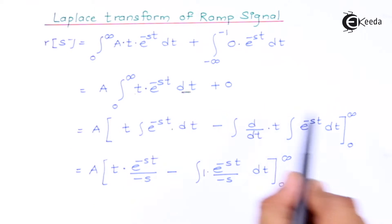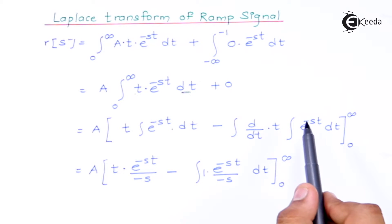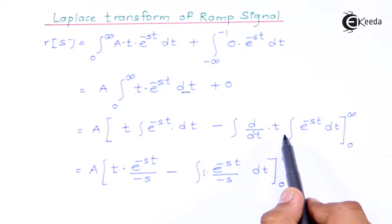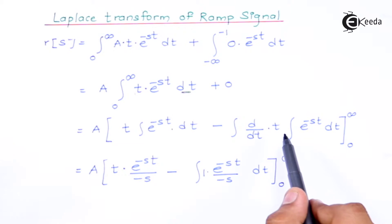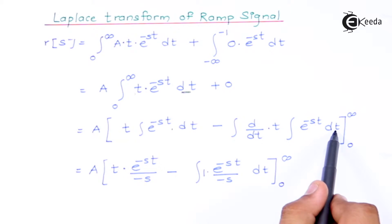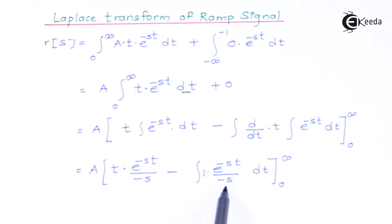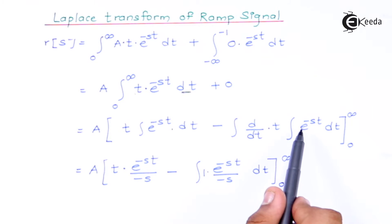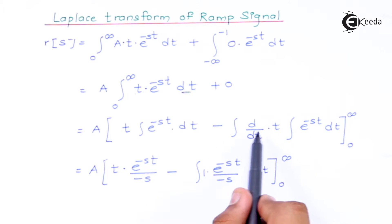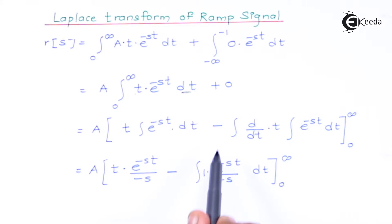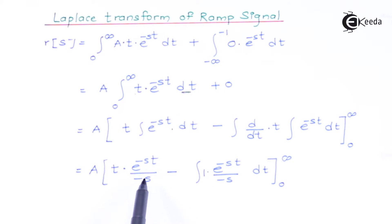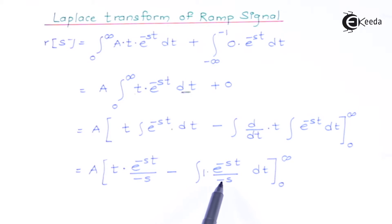The integral of e^(−st) is e^(−st)/(−s), as derived in the previous video on the step signal. The coefficient of t in the exponent is −s, so it appears in the denominator. For the second term, d/dt(t) = 1, so that simplifies. We then need to integrate e^(−st)/(−s) once more. Taking −s outside the integration changes the sign to plus, giving −t·e^(−st)/s plus the remaining integral of e^(−st).